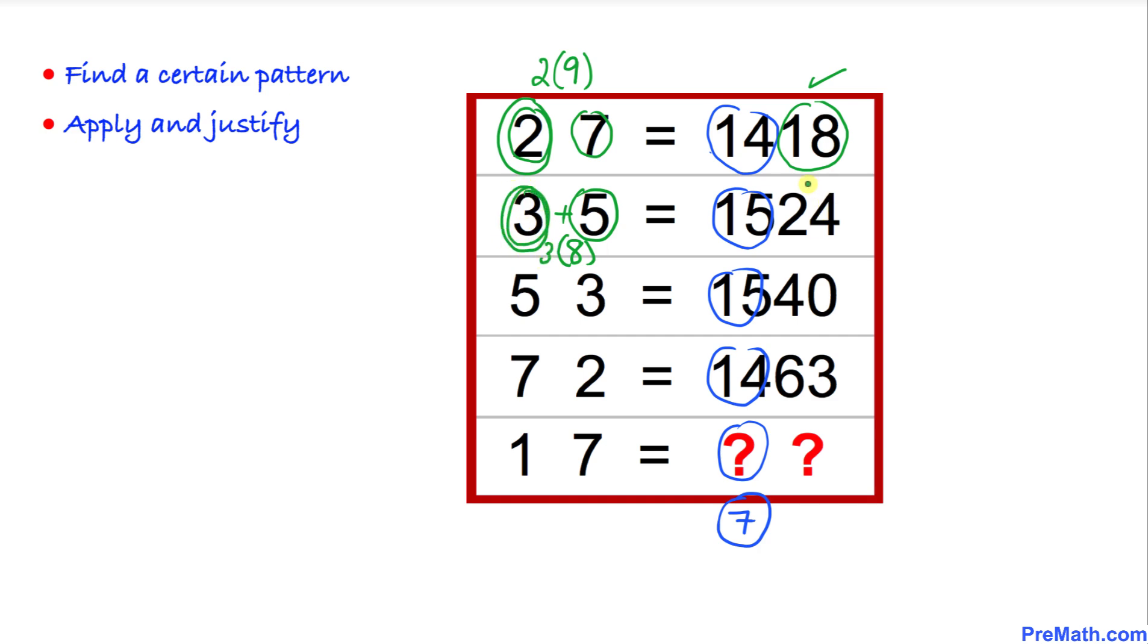3 times 8 is 24. Now let's add 5 plus 3—that gives us 8—and then we multiply by this first number, 5. 5 times 8 is 40. In the next row, let's add 7 and 2. 7 plus 2 is 9, and 9 times 7 is going to make 63.